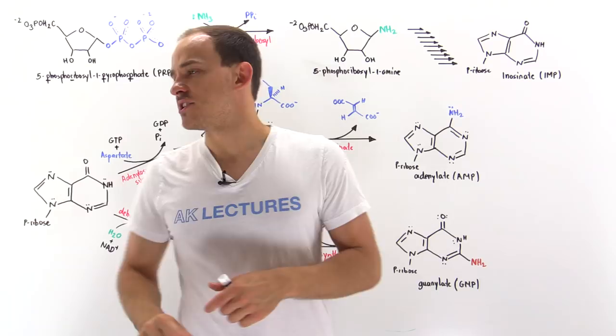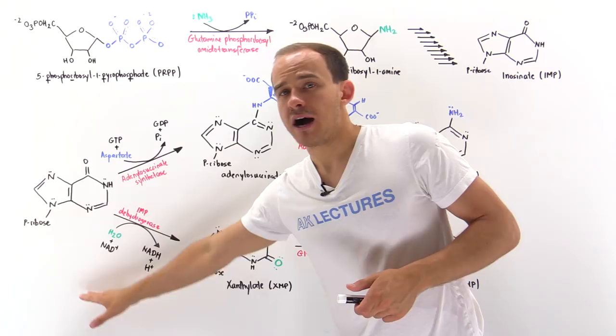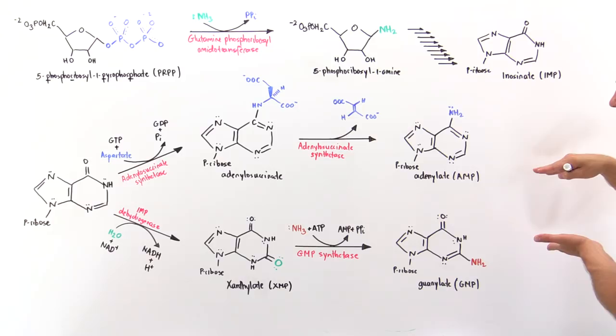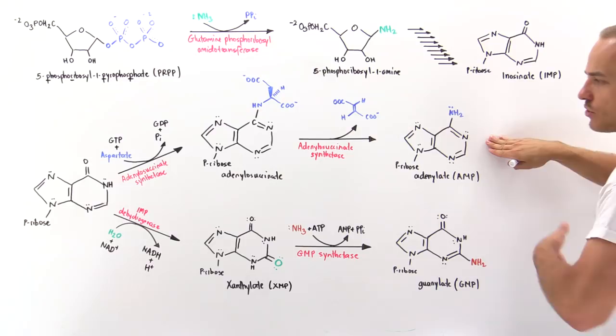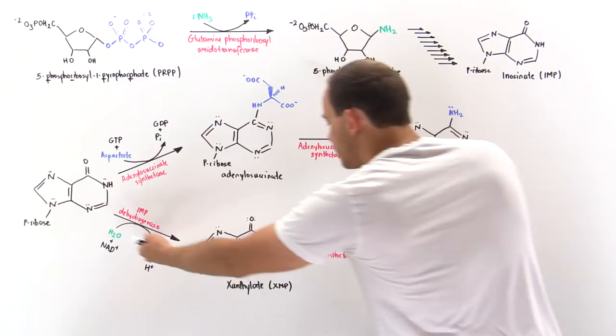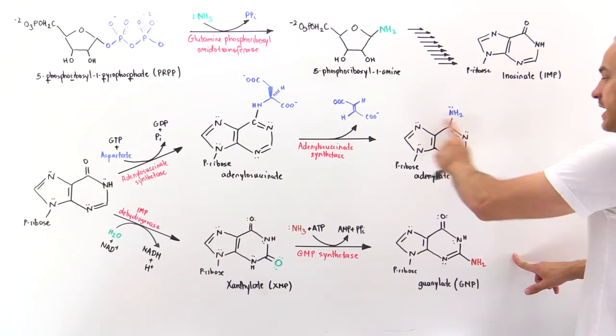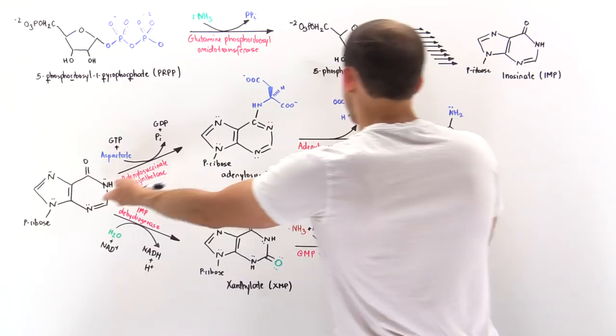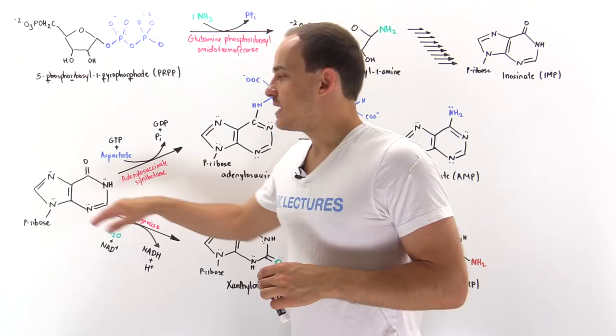Once we form the IMP, the IMP can basically follow one of two pathways. We can either follow this pathway and form AMP or we can follow this lower pathway and form GMP. The pathway that is followed is basically determined by the concentrations of these molecules within our cells. For example, if we have plenty of AMP and we need to build GMP, then these two enzymes will catalyze this pathway to form the GMP. On the other hand, if we have none of these molecules but lots of the GMPs, then this enzyme will catalyze this upper pathway to form the AMP.